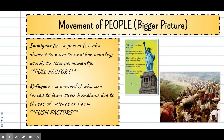There's an incredible inscription on the Statue of Liberty written by Emma Lazarus: 'Give me your tired, your poor, your huddled masses yearning to breathe free, your wretched refuse of your teeming shore. Send these, the homeless, tempest-tossed to me. I lift my lamp beside the golden door.' The idea being that the Statue of Liberty represents a pull factor — representing coming to the United States to stay permanently. An immigrant is a person or persons who choose to move to another country, and they're usually going to stay permanently.